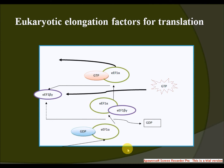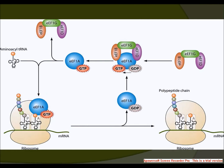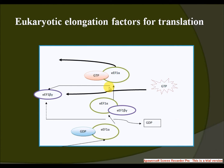The second elongation factor is eEF2, the counterpart to prokaryotic EF-G, catalyzing the translocation of the tRNA and mRNA down the ribosome at the end of each round of polypeptide elongation.